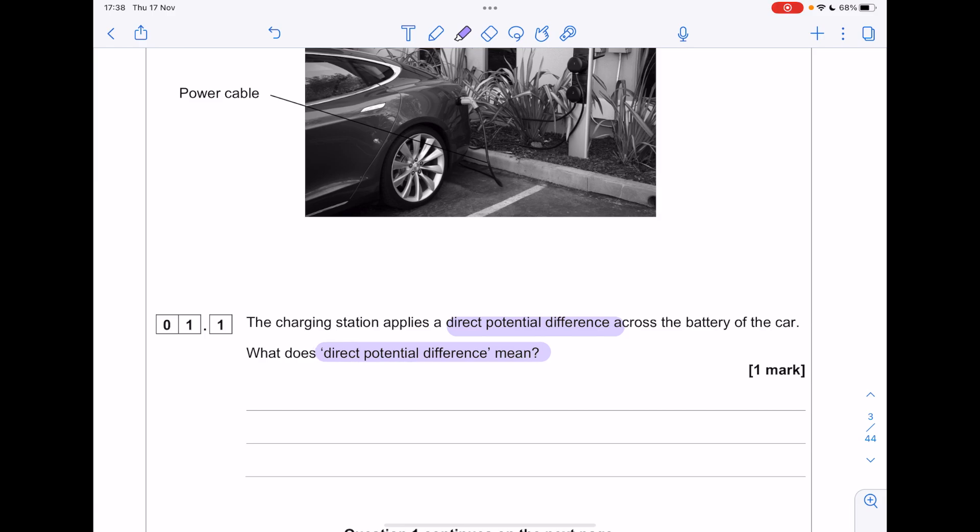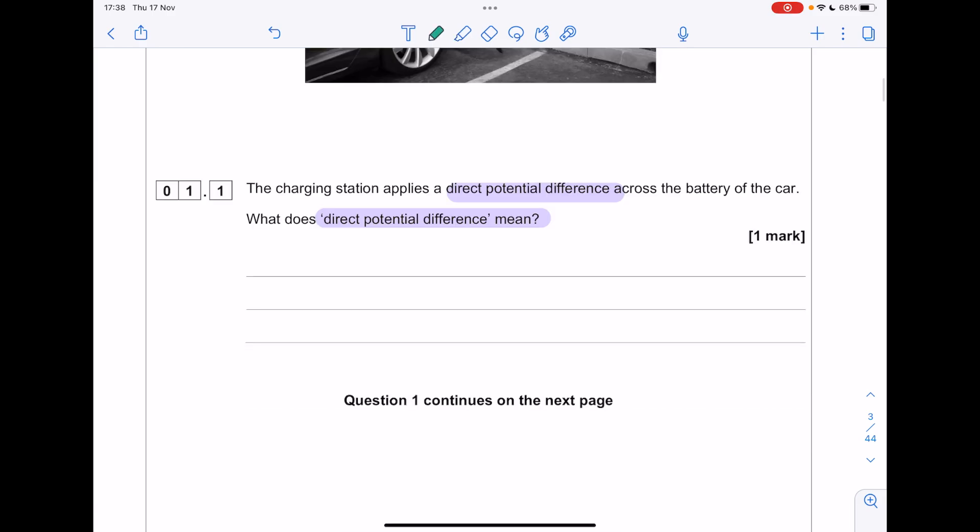What does direct potential difference mean? Remember, in terms of physics, direct means in one direction only, e.g. DC, direct current. It's very similar. Direct potential difference means potential difference is in one direction only.